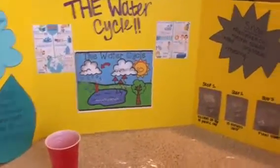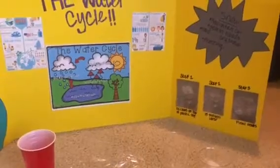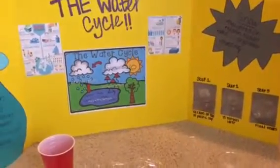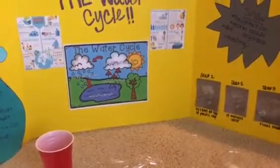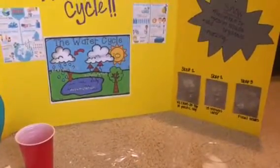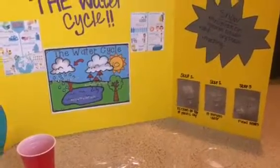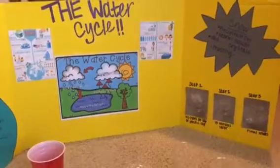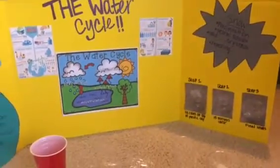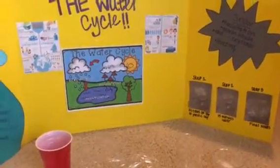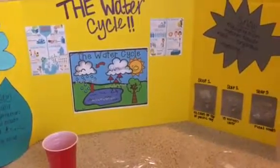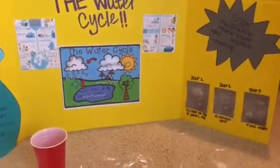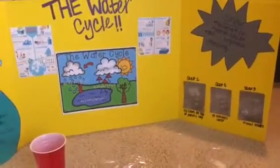To the right I have step one, step two, step three — basically what my students will be creating when they are at this center. Step one: ice cubes on top of plastic cups. Step two: 15 minutes later they would observe. Step three is the final result. This is a step-by-step guide for my students to refer back to if they're needing help or struggling.